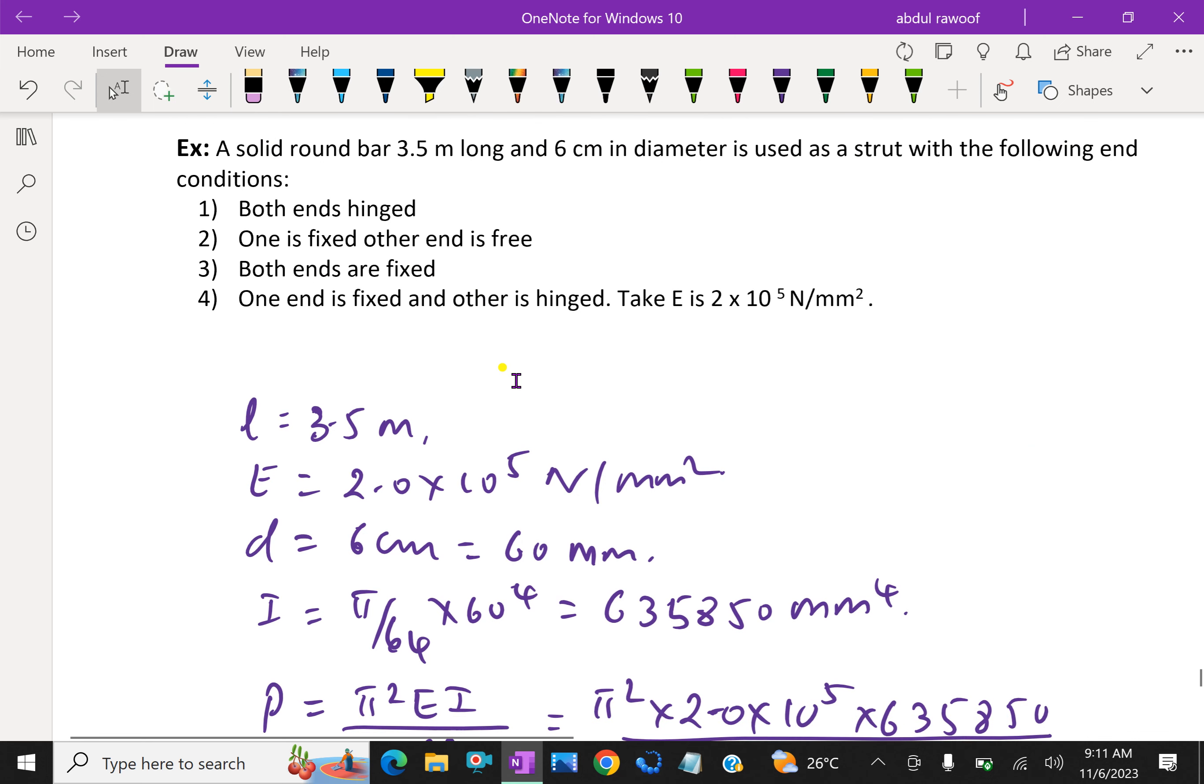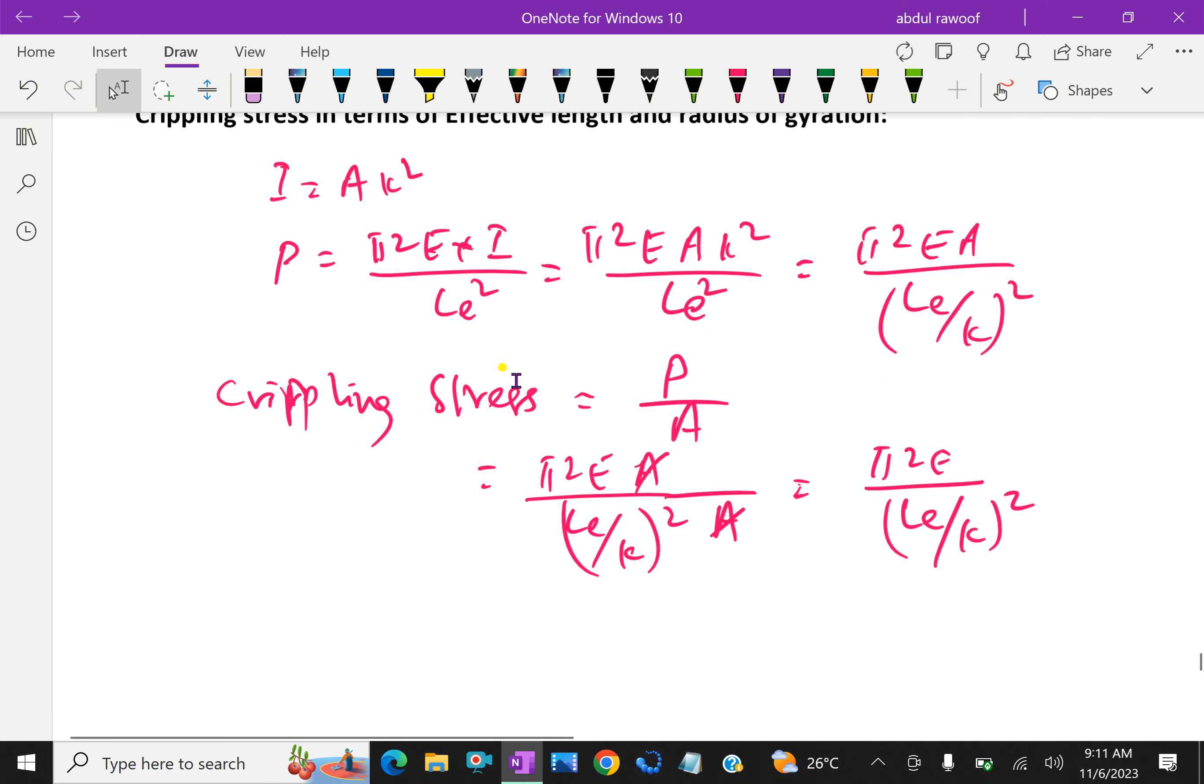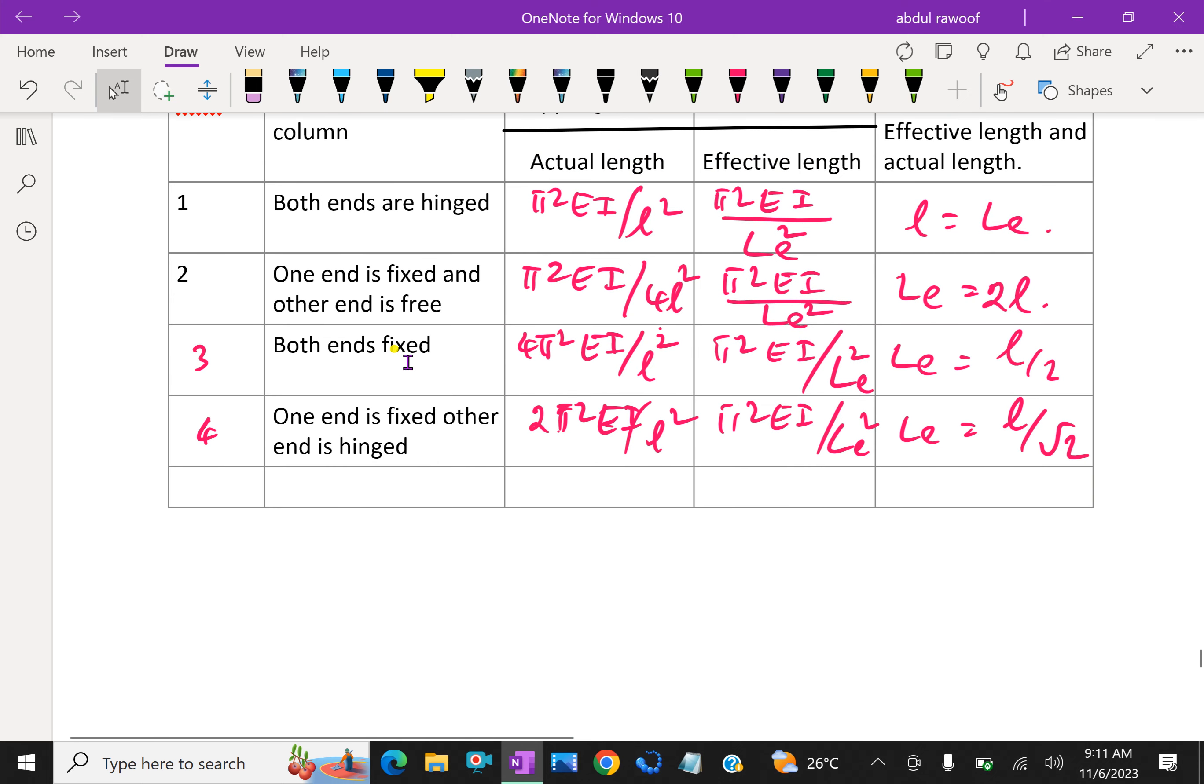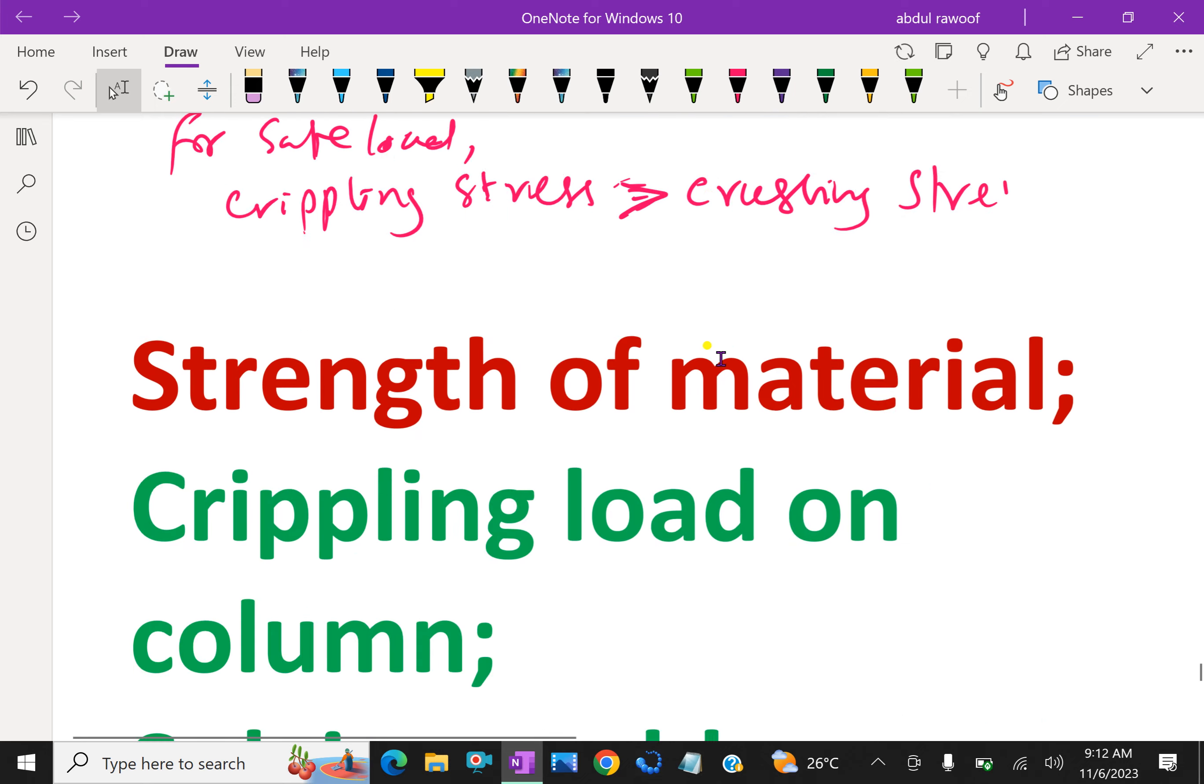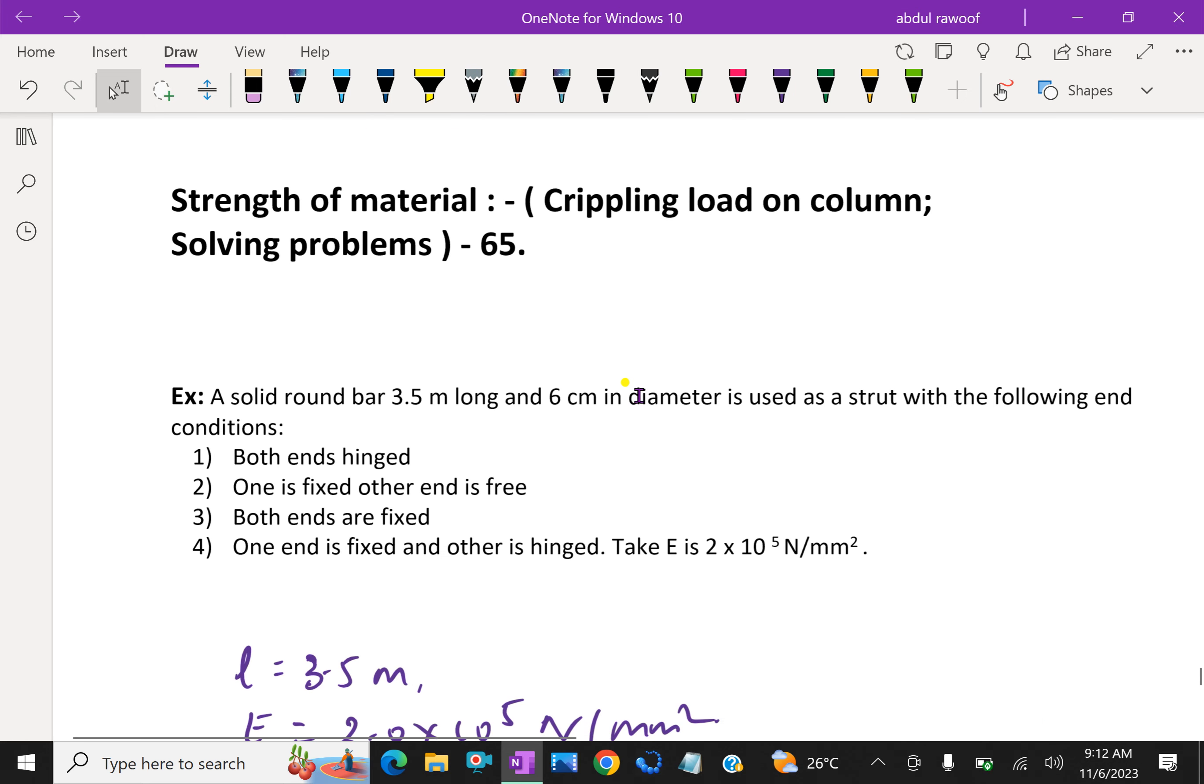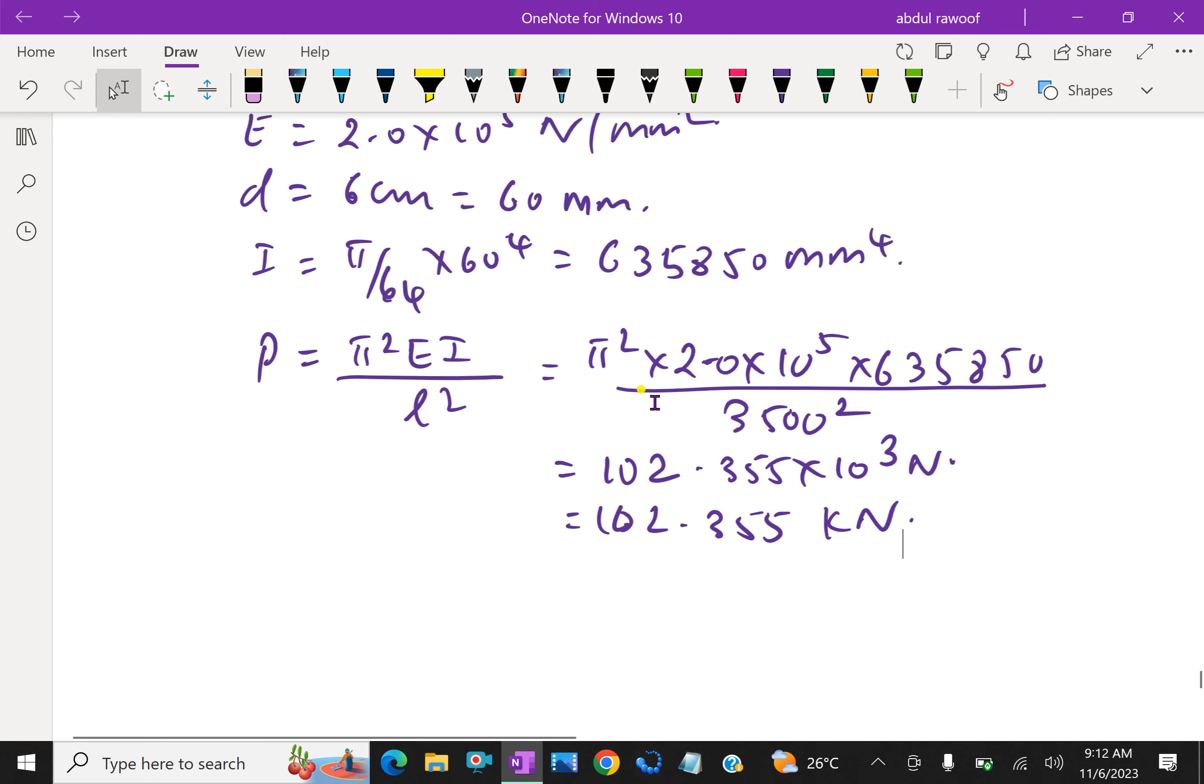Now, second part is one end is fixed and the other end is free. Look at this table. We are using this table. For both ends hinged, L is equal to length of the strut, equal to equivalent length. One end is fixed and the other end is free, then equivalent length is equal to 2 into length of strut.